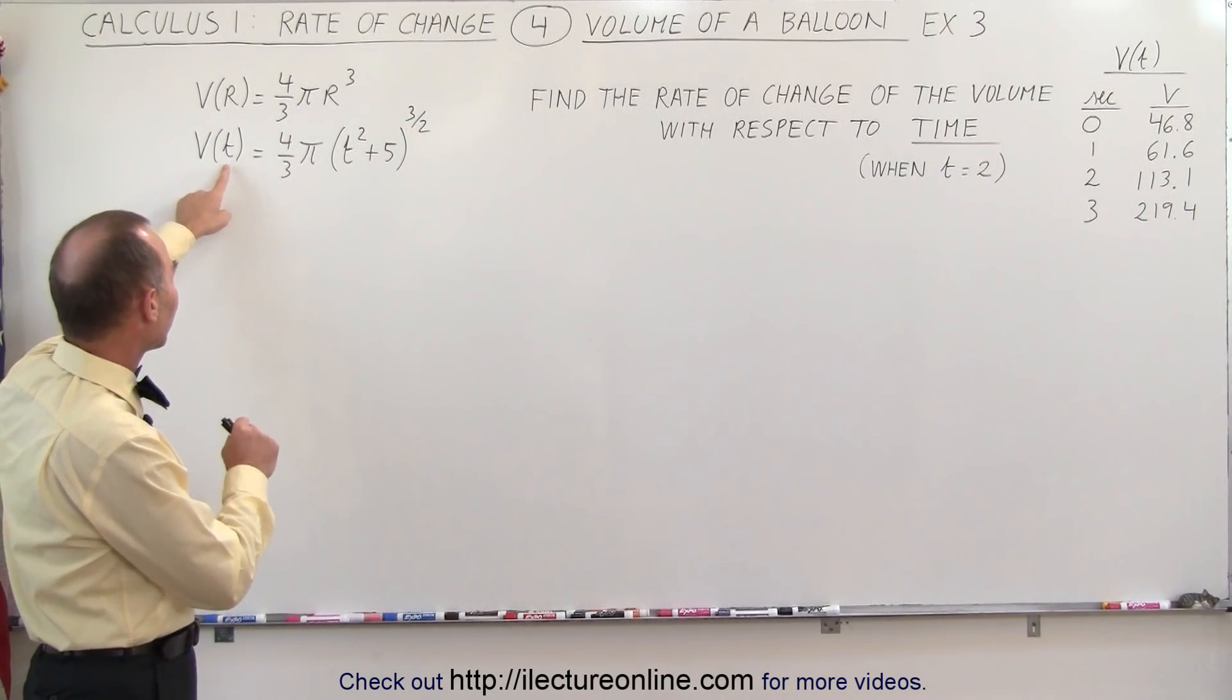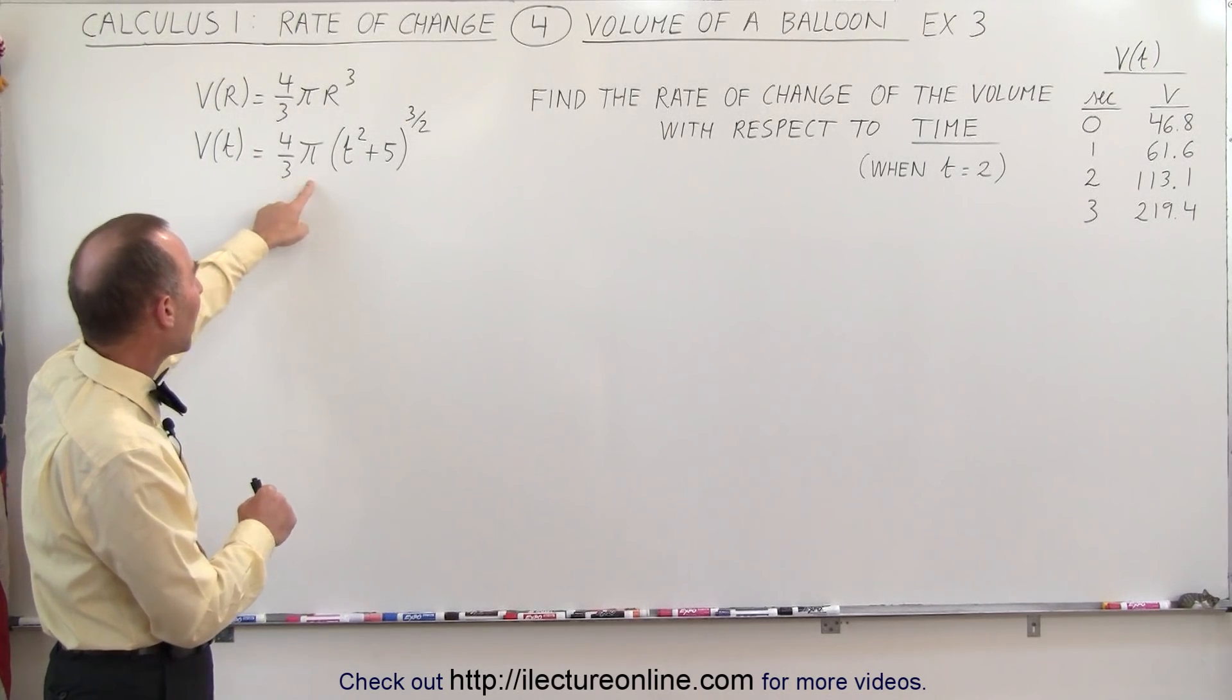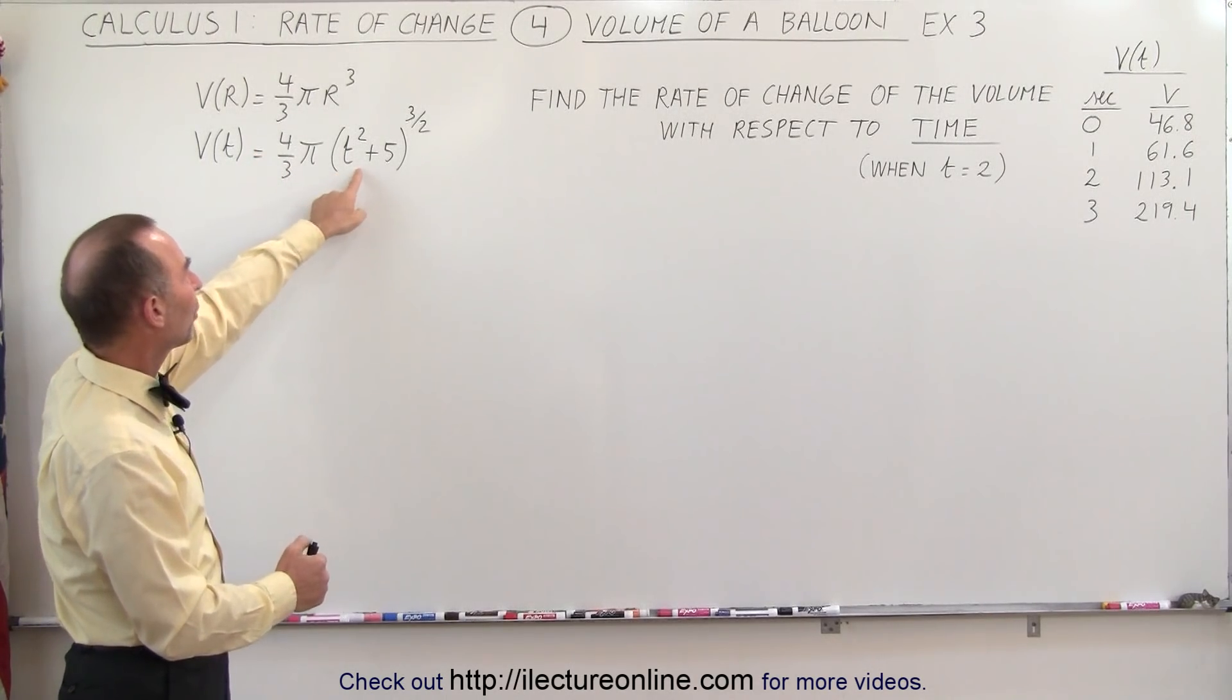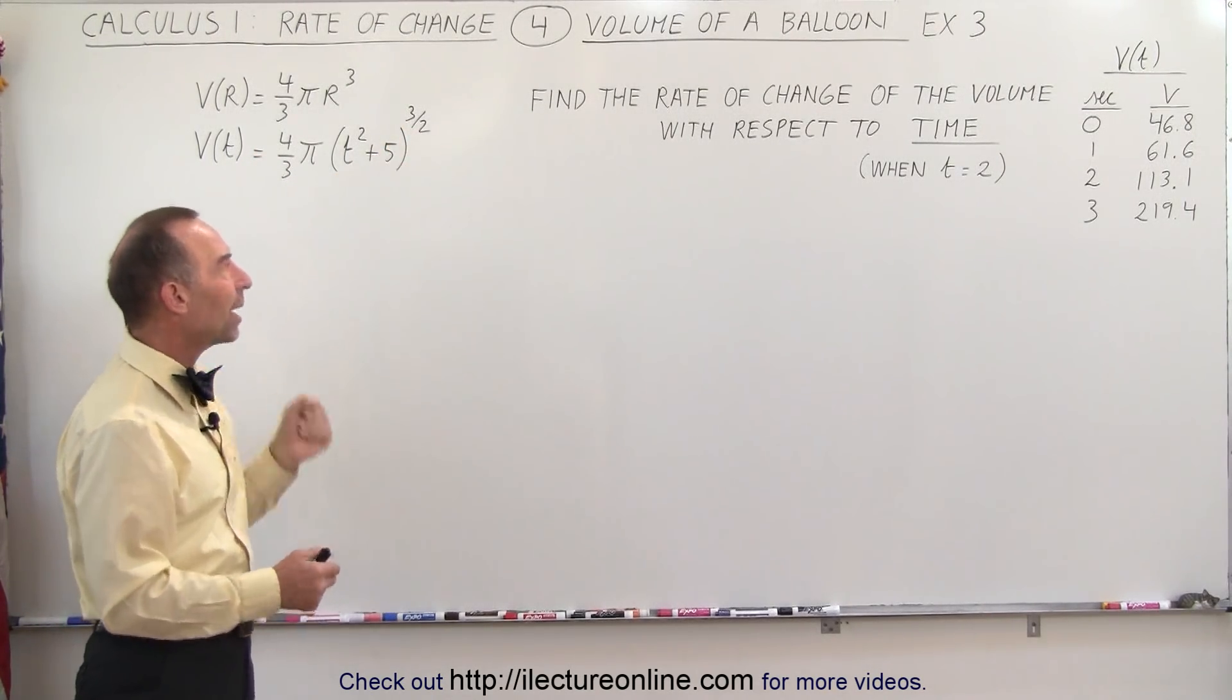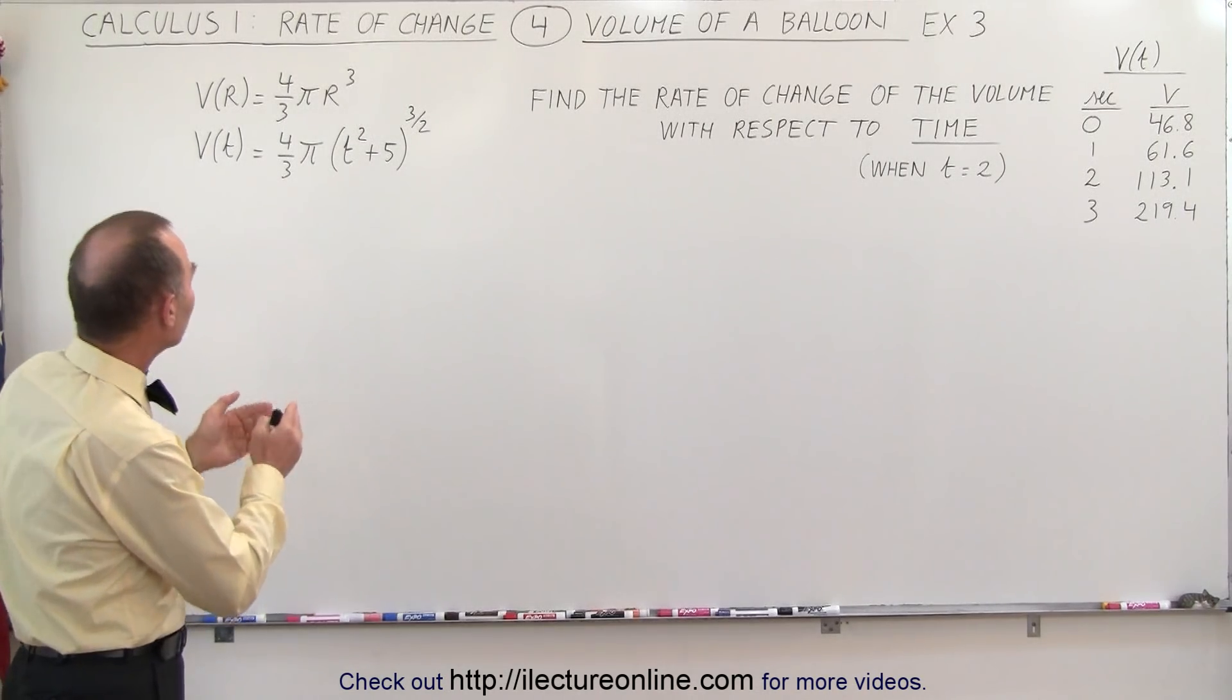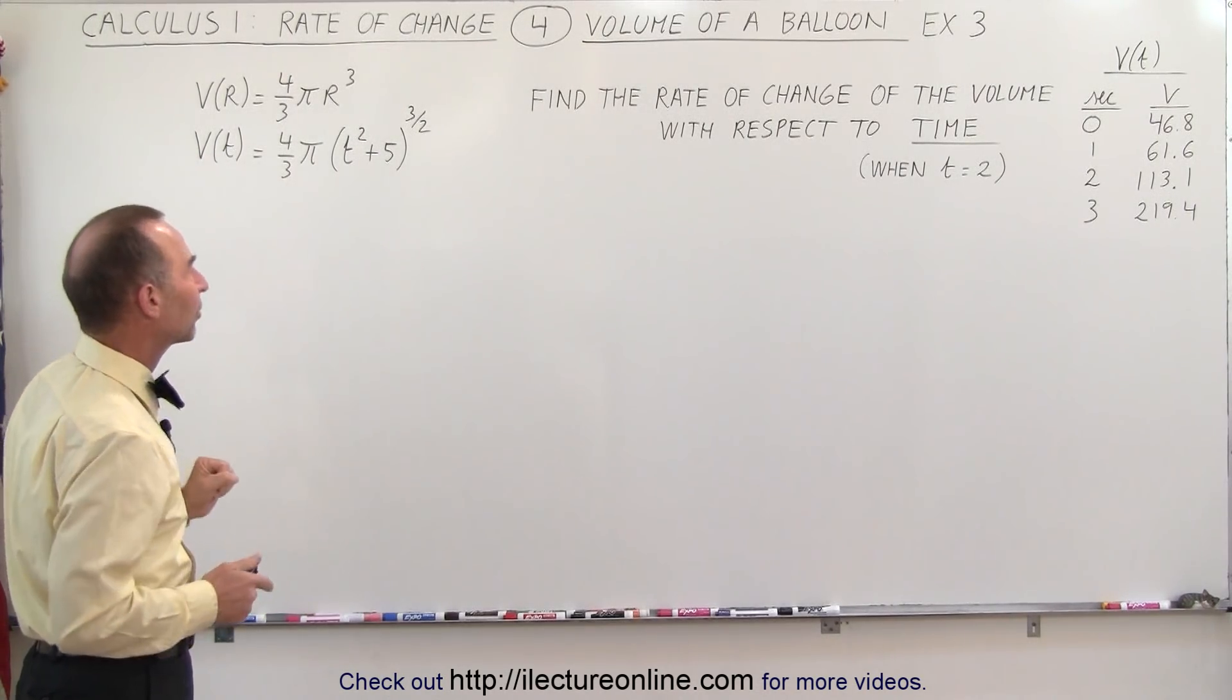If we find that the volume as a function of time is equal to 4 thirds pi times the quantity t squared plus 5 raised to the 3 halves power, then how do we find the rate of change of the volume with respect to time?